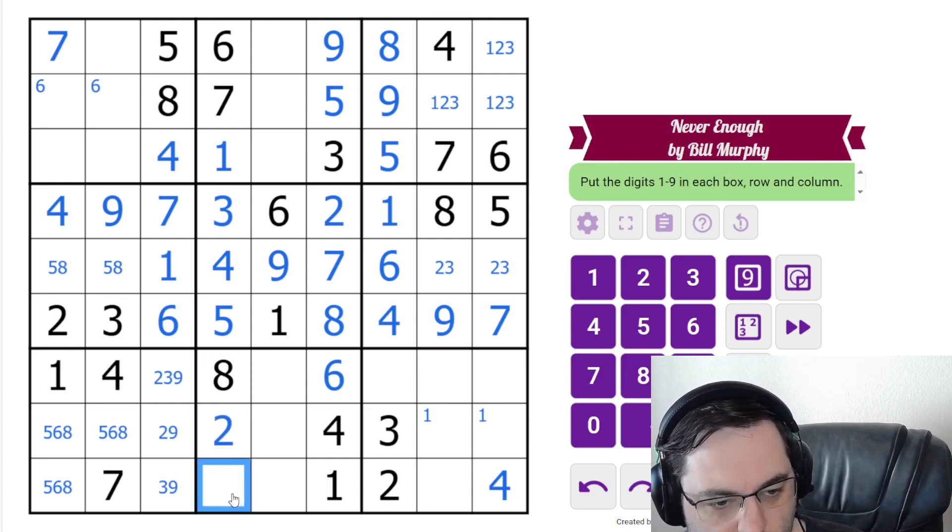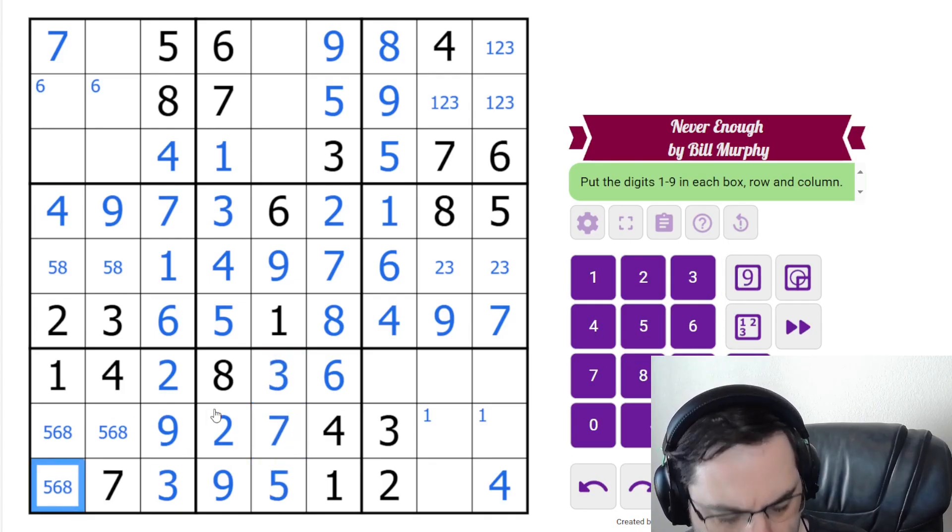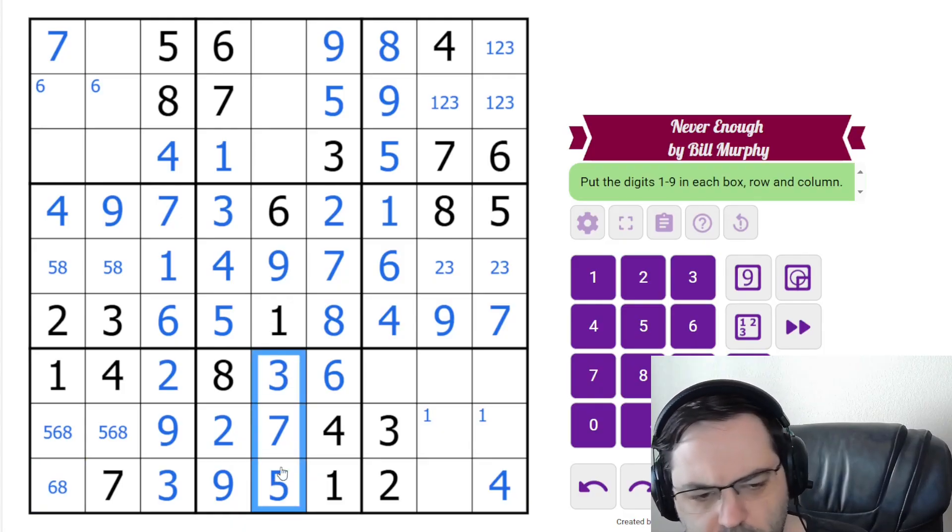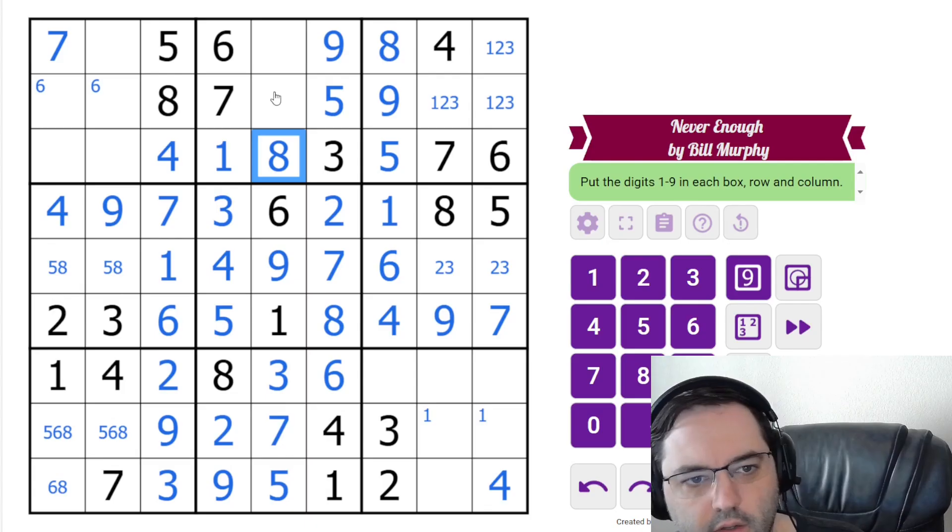And then down here, we need 2 and 9, so that gives us 9, 3, 2. These are 3, 5, 7. So that's 5, 7, 3 like that. That's a case where you definitely don't need the pencil marks, but sometimes I will just automatically type them. And seeing what they look like helps with finding what I actually need to place.